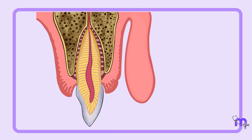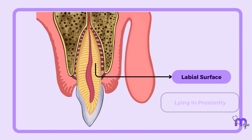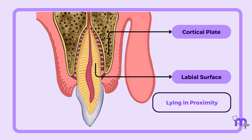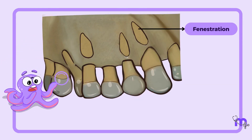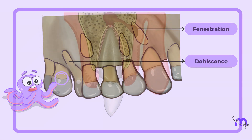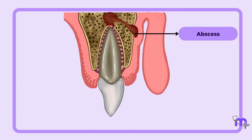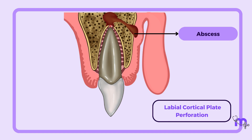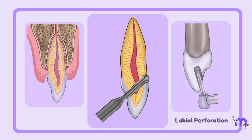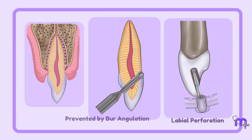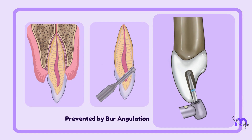While preparing the axis cavity of maxillary central incisors, you should always be mindful of the labial surface of the root lying in proximity to the cortical plates, meaning you may find fenestration and dehiscence there. In case of an abscess, a labial cortical plate perforation may be seen. This makes the central incisor one of the most prone teeth to labial perforations while axis opening is being attempted. Therefore, burr angulation during axis opening plays an important role in preventing labial perforations.